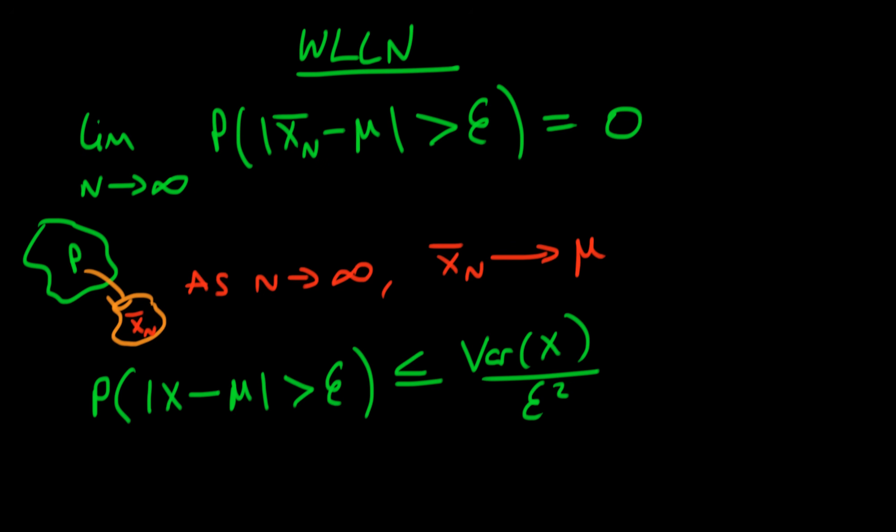But of course X is completely arbitrary in this case, we can just replace X by another random variable which is x̄ₙ and this relationship still has to hold. But this right-hand side, the variance of x̄ₙ, we can actually calculate in the case that we've got iid observations from a population.